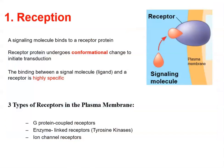Reception means a signaling molecule will have to bind to a receptor protein. Receptor proteins can be embedded in a plasma membrane, as seen in this picture, or they can be located in the cytoplasm — we call those intracellular receptors. No matter where they are, when the signaling molecule binds to a receptor, the receptor undergoes a conformational change, which is going to initiate transduction pathways.